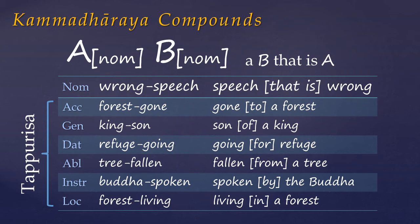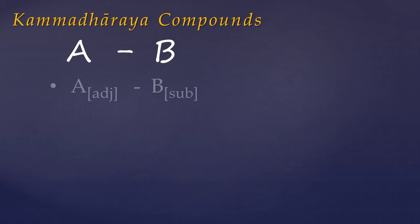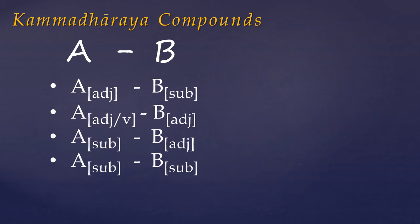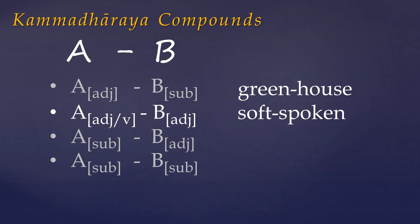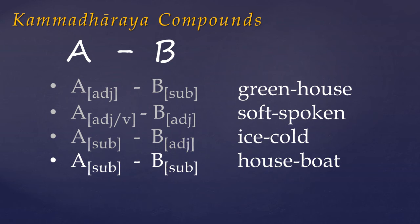A kamadharaya always has two members and can take one of four forms. The most characteristic is where there is a leading adjective qualifying a substantive noun. But we can also find an adjective or adverb which qualifies another adjective — and this is often a verbal adjective such as a participle — for example, softly spoken. A substantive may adverbally qualify an adjective, such as cold as ice. Or two substantives can come together either in apposition or in a simile: a boat that is like a house.